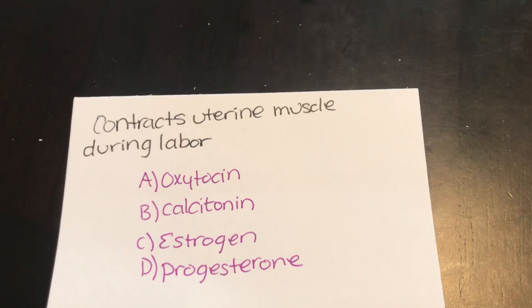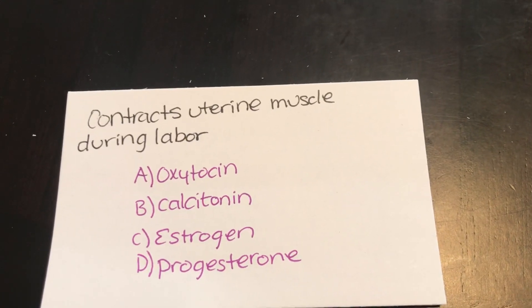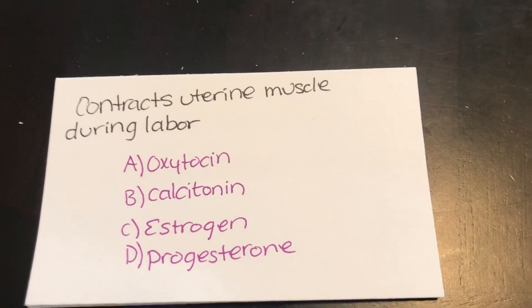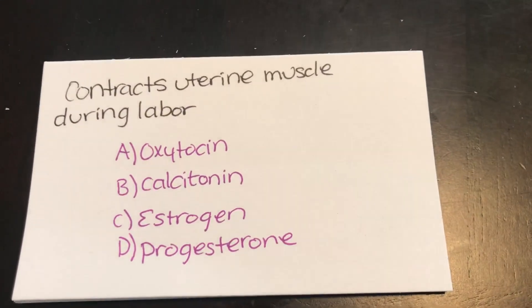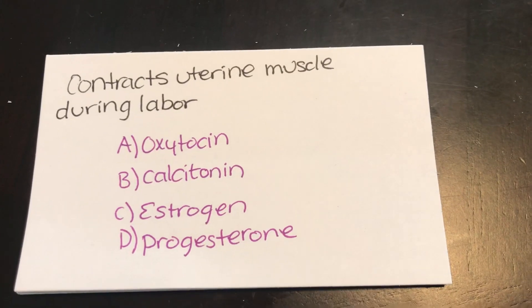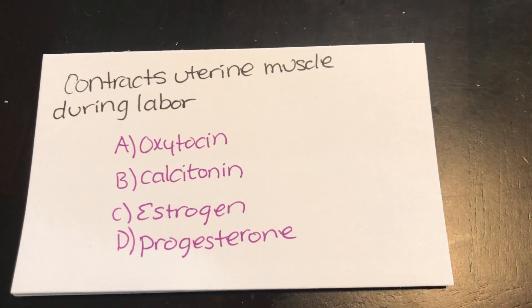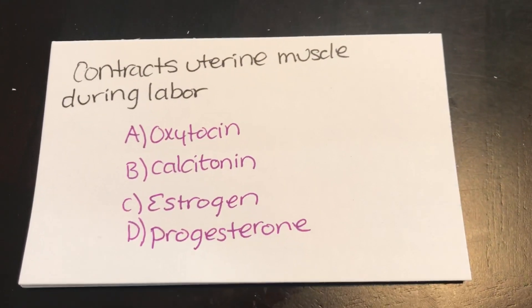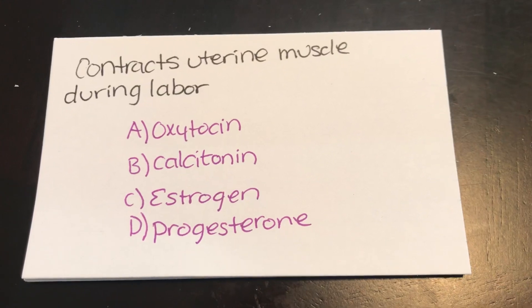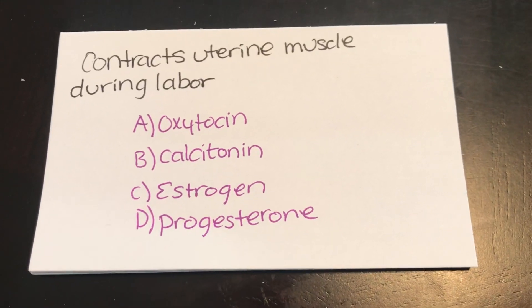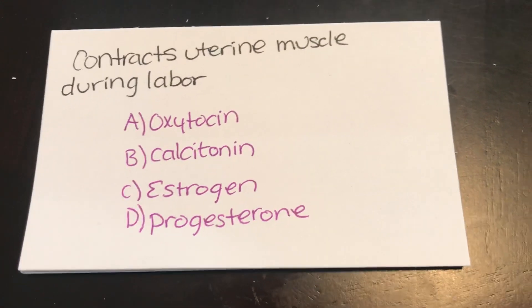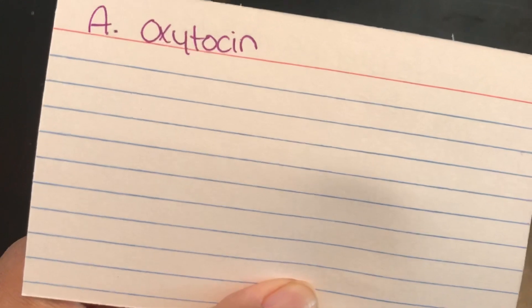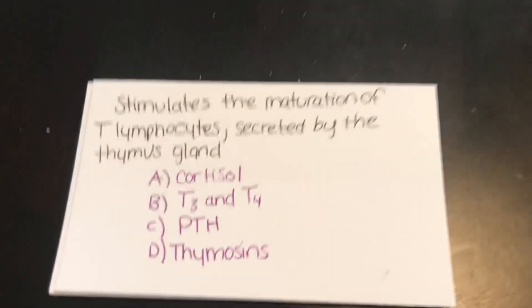Which contracts uterine muscle during labor? A, oxytocin. B, calcitonin. C, estrogen. Or D, progesterone. Answer: A, oxytocin.